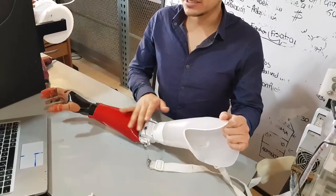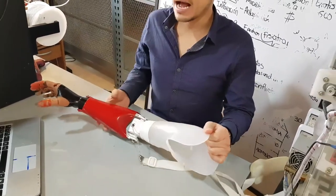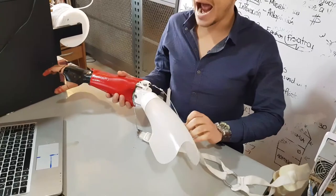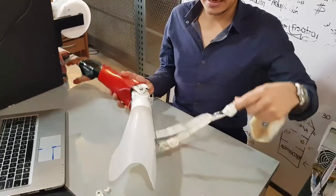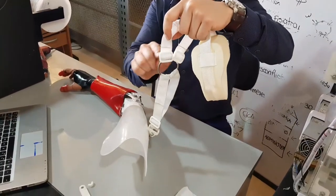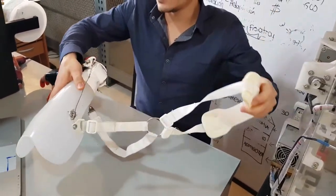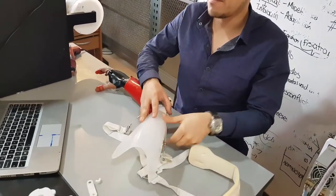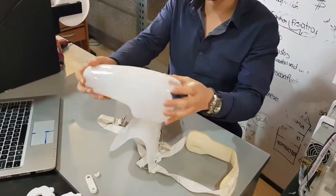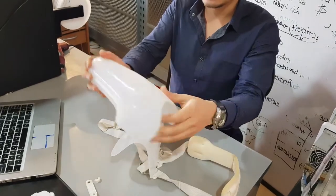The 3D printed prosthesis is activated by a scapular action with a harness. This is the harness with a ring, and it is composed of a polycarbonate socket made in an orthopedic lab.